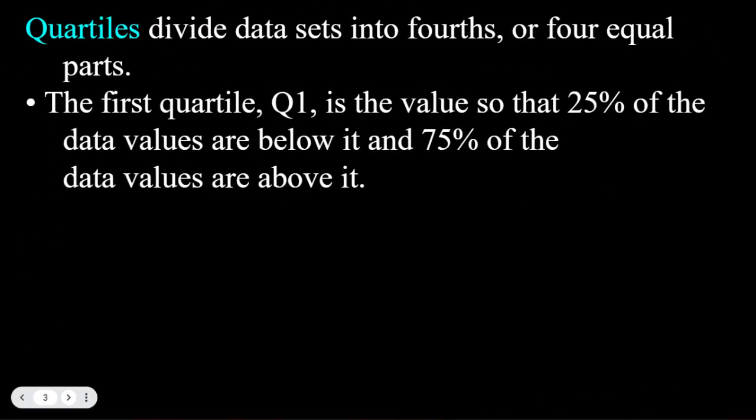Another way we measure data and location is what are called quartiles. Quartiles divide data sets into fourths or quarters or four equal parts. The first quartile, Q1, is the value so that 25% of the data values will be below that quartile value and 75% of the data values are going to be above it.